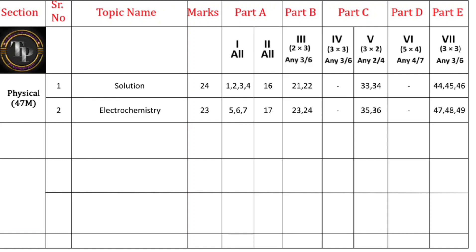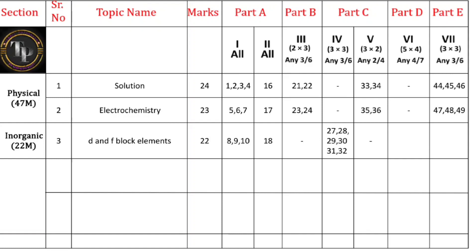Talking about inorganic chemistry — only one chapter is there for midterm, that is D and F block elements. You will get a total of 22 marks from this chapter. Three MCQs, one fill in the blanks, no two-mark questions. In Part C, you will get six three-mark questions from this chapter, out of which you have to answer only three. Five-mark questions and numerical problems are not there for this chapter. Total: 22 marks.